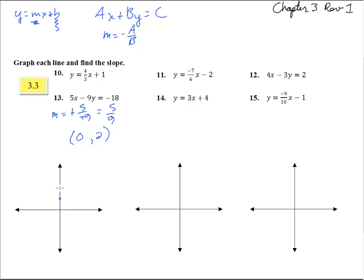And then up five, one, two, three, four, five, one, two, three, four, five, six, seven, eight, nine. Good. There we have number thirteen.